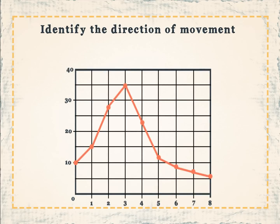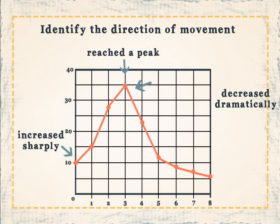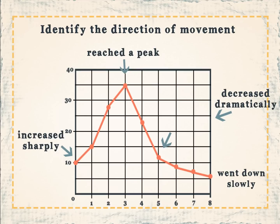Identify the direction of movement in this graph. The initial coordinates are increasing sharply, then they reach a peak at the highest point, then they decrease dramatically, and the final few coordinates go down slowly.